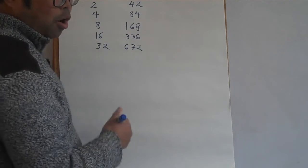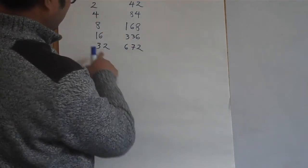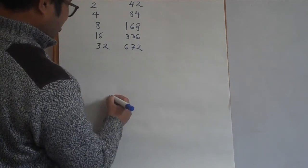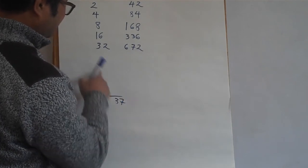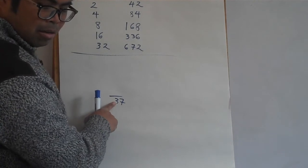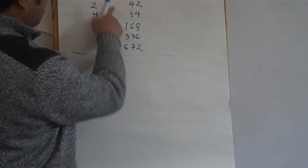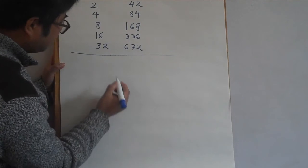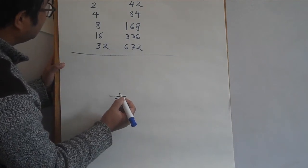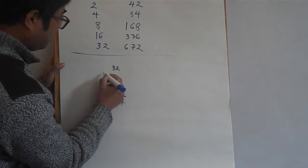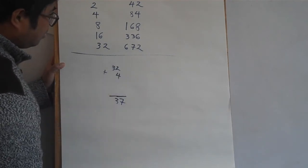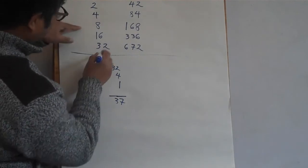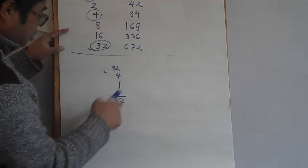We can go on, but the main thing to watch is: can we add any of the left-column numbers to make thirty-seven? Thirty-two plus four plus one is thirty-seven. So we mark those rows.